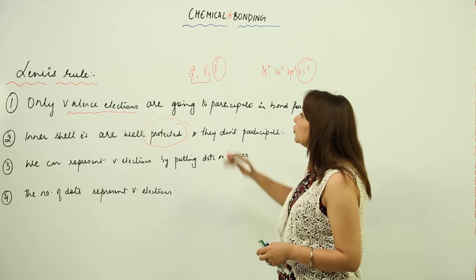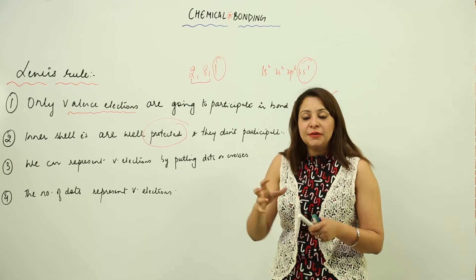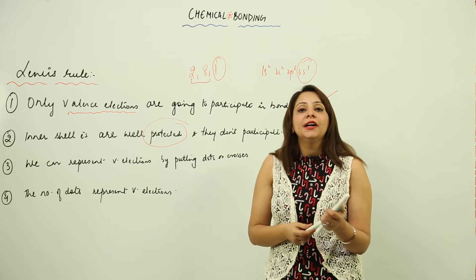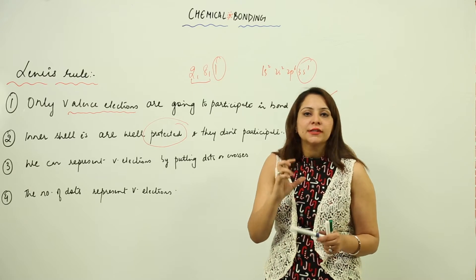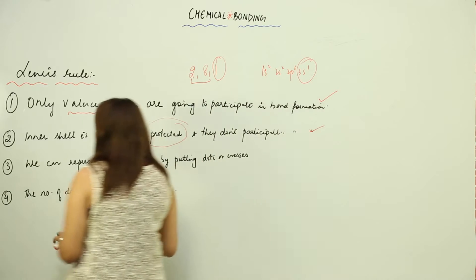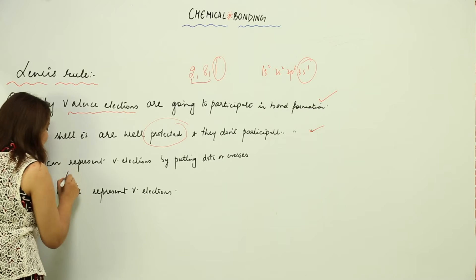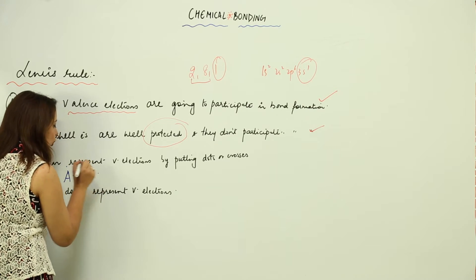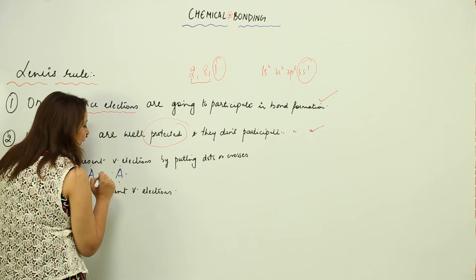Likewise, we need to represent these valence electrons — the electrons which are going to participate in bond formation — and they are represented by dots or crosses. If an atom has one valence electron, you show one dot; two valence electrons, two dots; three valence electrons, three dots; four valence electrons, four dots.